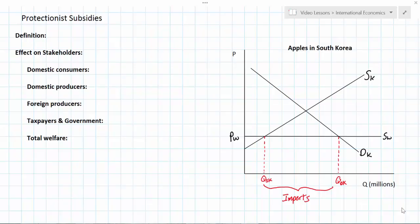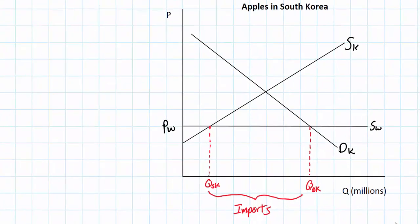We're going to use the same example as we have in our previous two videos on protectionism — the market for apples in South Korea. Assume, as we have in previous lessons, that the world price of apples, PW, is lower than the domestic equilibrium price found at the intersection of SK and DK. The world supply is perfectly elastic because Korean consumers can buy as many apples as they want at the world price without causing it to rise. Due to Korea's comparative disadvantage in apple production, Korea will import a quantity of apples from QSK to QDK under free trade.